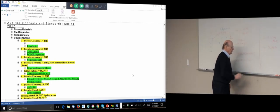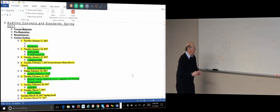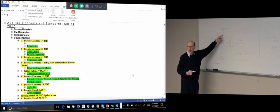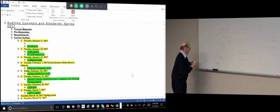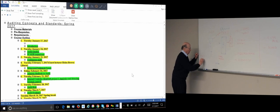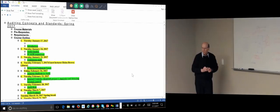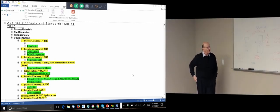The principals are the stockholders, the company is the agent, and then we have assurances. We actually have at least two types of assurances — internal and external audit. What is the difference in their motivations?